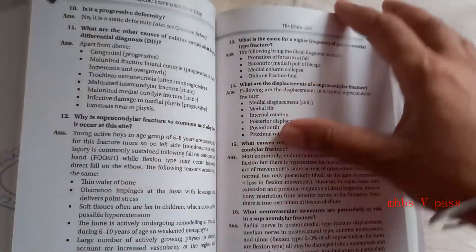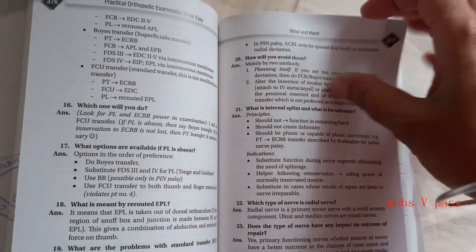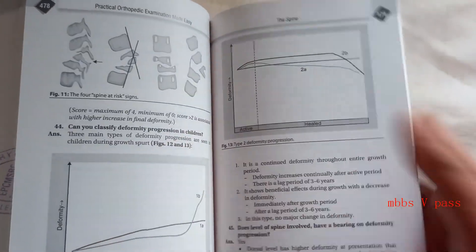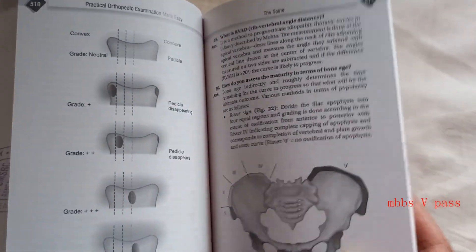So now we have reached foot and ankle, shoulder, elbow joint, wrist and hand. We are not going into the details of everything, we are just looking at the overall of this book. Spine.